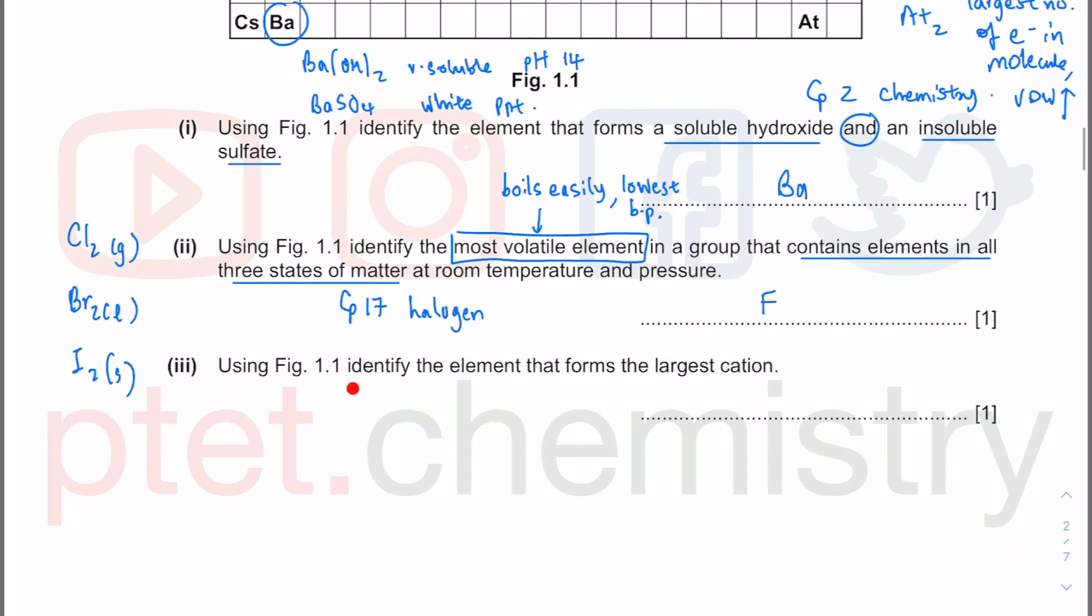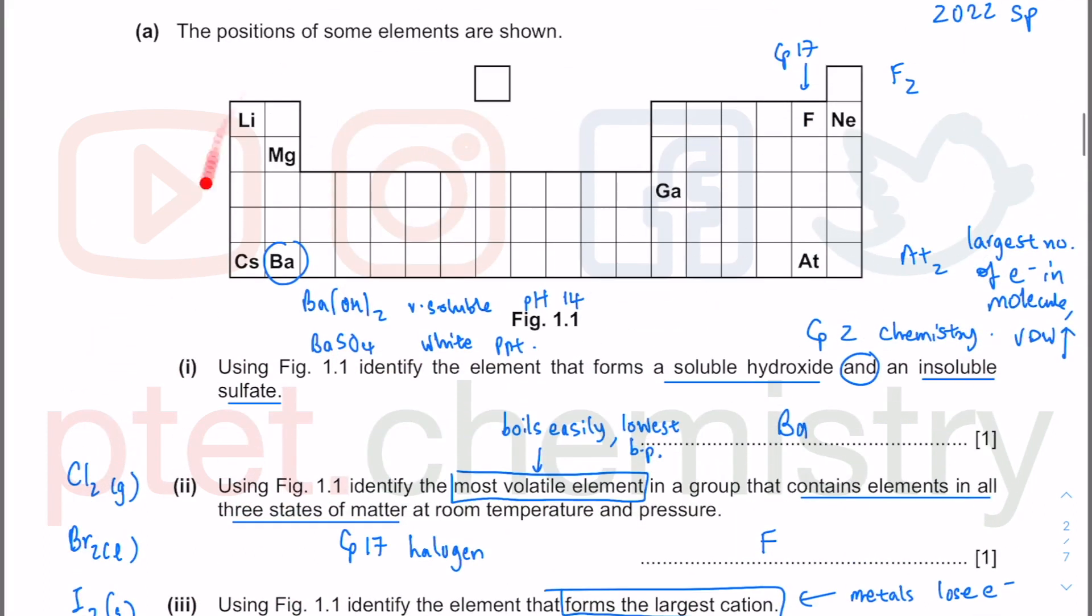Now using figure 1.1, identify the element that forms the largest cations. So we know that the metals lose electrons and you will get cations. So we're looking at the metal side here. The largest, largest there means the size. So obviously you know we have this thing which has the most number of shells. These are electron shells. So the more shells they have, the bigger is their size.